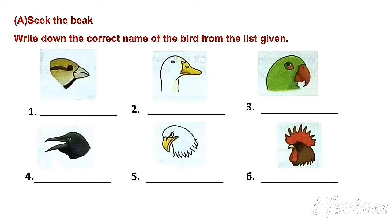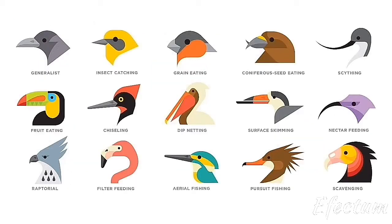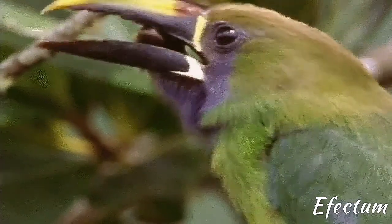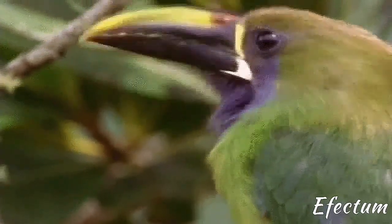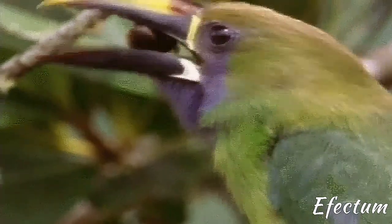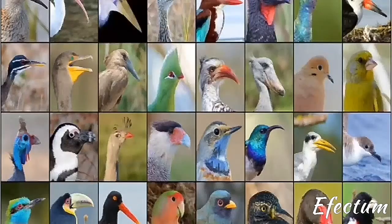First let us learn about the beaks of birds. Birds don't have teeth, they have beaks. A bird uses its beak to catch and eat food. Different birds have different kinds of beaks depending upon the food they eat.